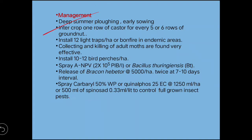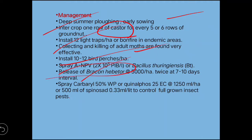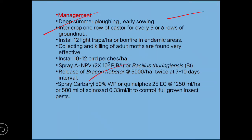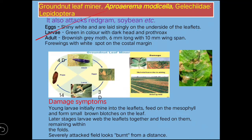For management of hairy caterpillars, you can follow summer plowing or early sowing, do intercrop with castor, install light traps, apply NPV or Bt, conserve or release the braconid parasitoid, and spray carbaryl, quinolphos, or spinosad.